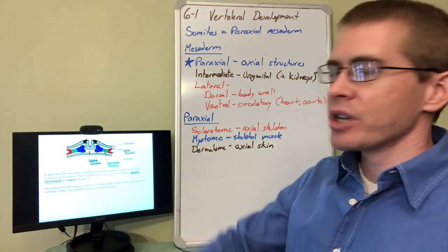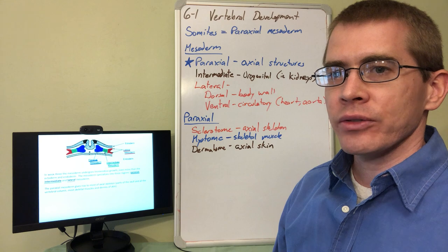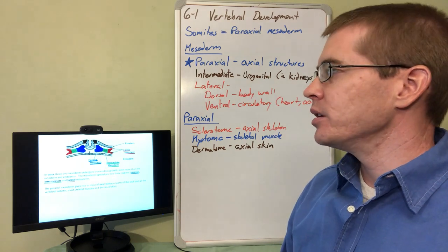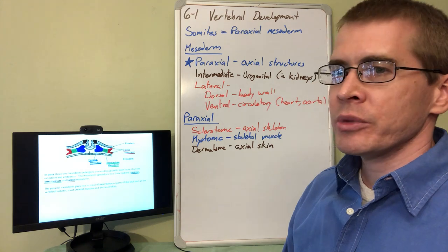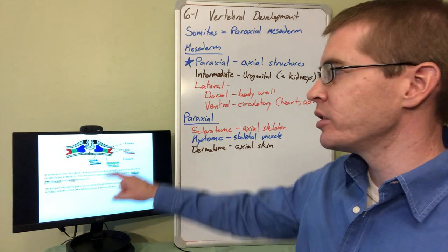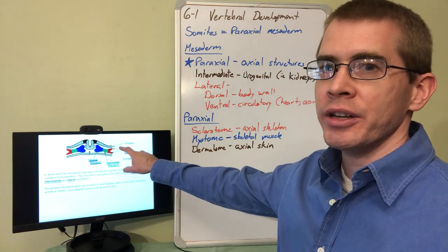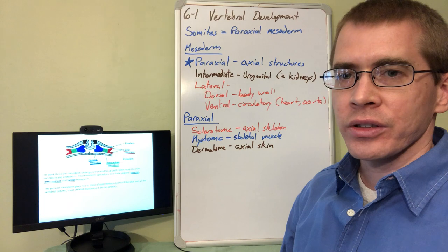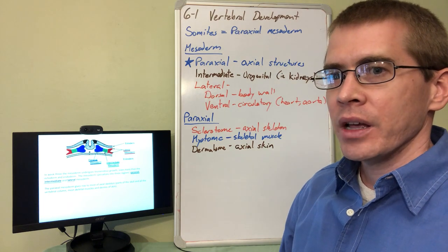Other portions of the mesoderm become different structures. The lateral mesoderm is particularly important because it forms some of the body wall, especially the dorsal portion, whereas the ventral portion will form part of the heart and aorta—basically the circulatory system as a whole.